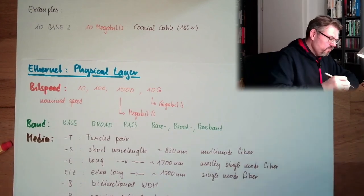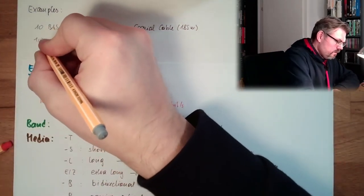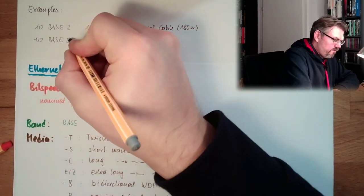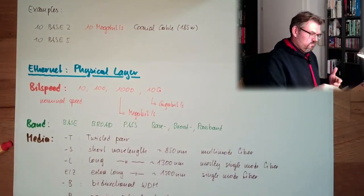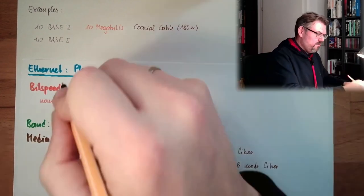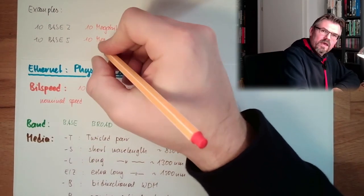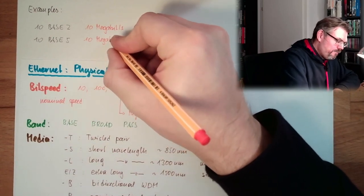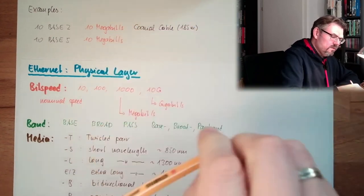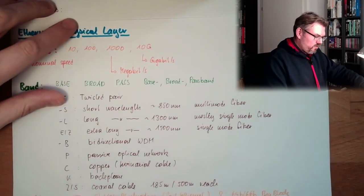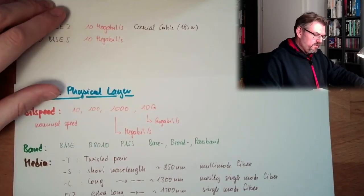Another example would be 10Base5. What is this? 10, 10 megabit per second. We also have coaxial cable, this five meant coaxial cable but with 500 meters reach.